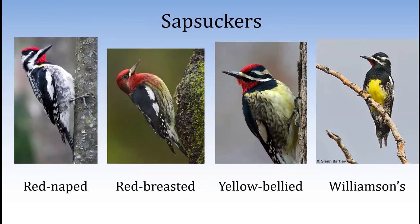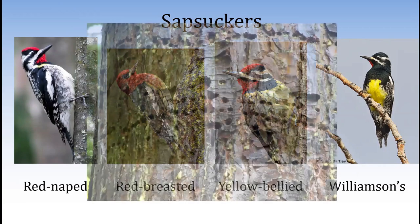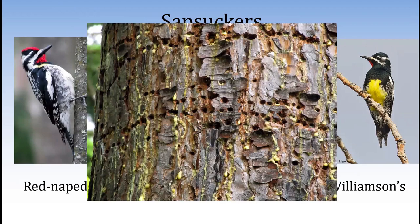Sapsuckers are a really fascinating group. We've got four species in North America. The red-naped is the one we have around Boise most commonly; Williamson's are up higher in the mountains; yellow-bellied in the East; and red-breasted more on the West Coast. What these guys do is drill little pits into the bark of trees, then come back maybe an hour or a day later and lick out the sap that pools into these little wounds. There are also insects attracted to the sap that get stuck there, so sapsuckers can gobble up those insects too — showing the incredible variety and diversity in the way birds have figured out how to exploit this world.